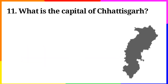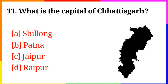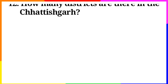Question No. 11: What is the capital of Chattisgarh? Option A: Shillong, B: Patna, C: Jaipur, D: Raipur. Answer is Option D: Raipur.